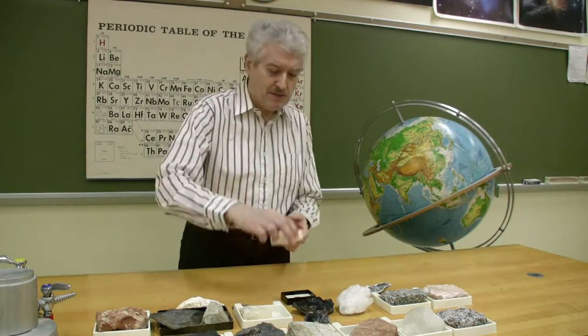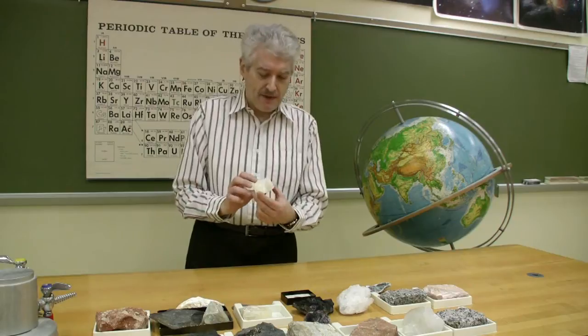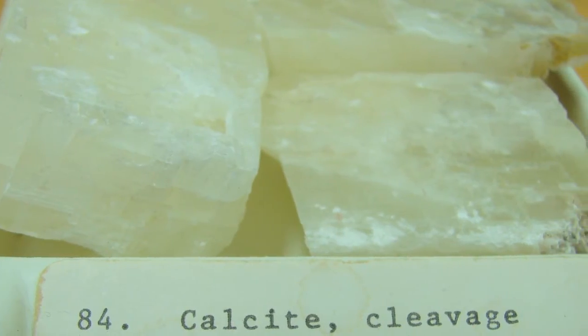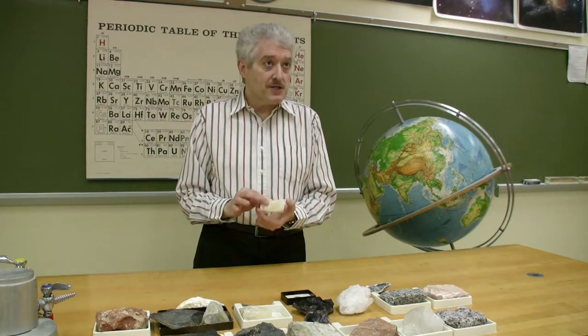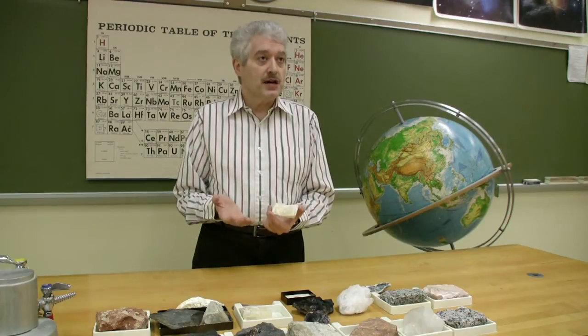For example, here is a material called calcite. It is a compound of calcium, carbon, and oxygen. CaCO3 is its chemical formula.